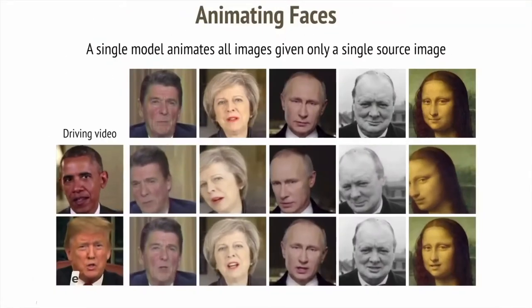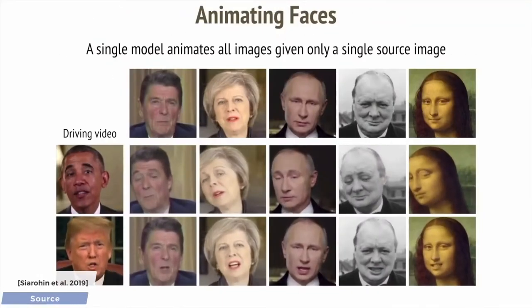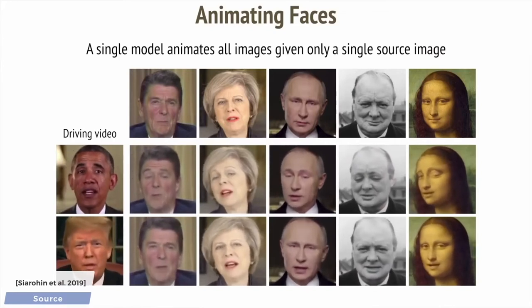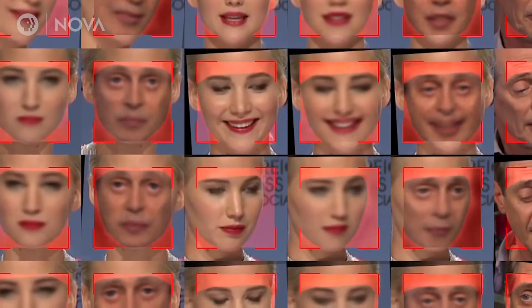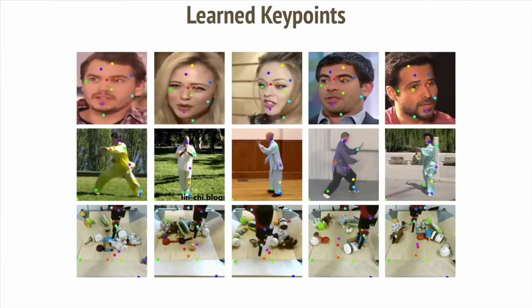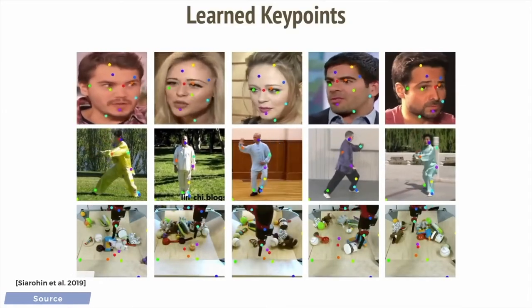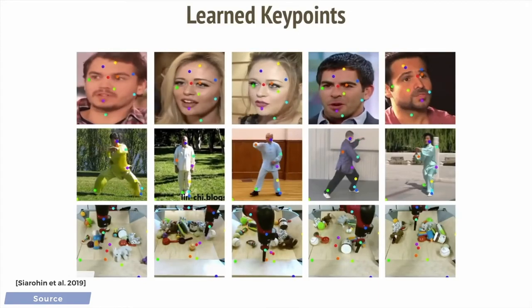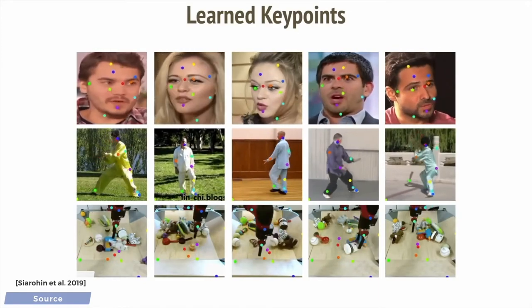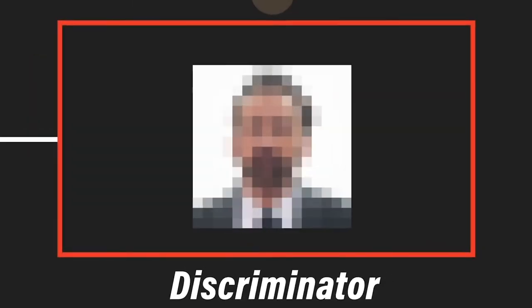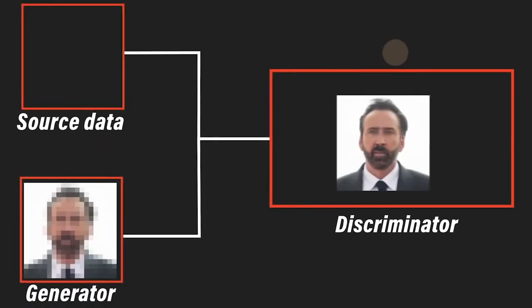It takes quite a few steps to make a face swap video. Primarily, the maker runs thousands of face shots of the two chosen people through an AI algorithm called an encoder. The encoder finds and learns similarities between the two faces and reduces them to their shared common features, compressing the images in the process.